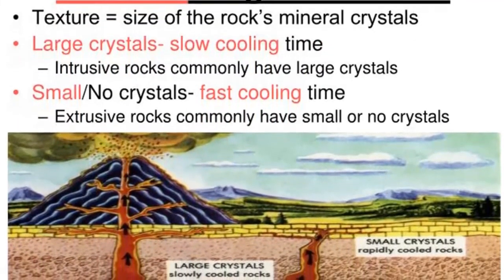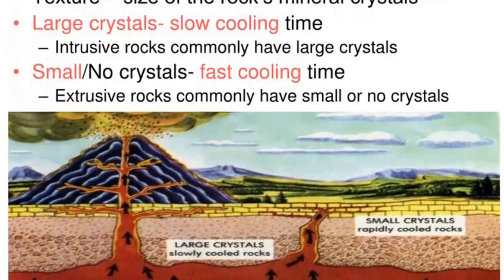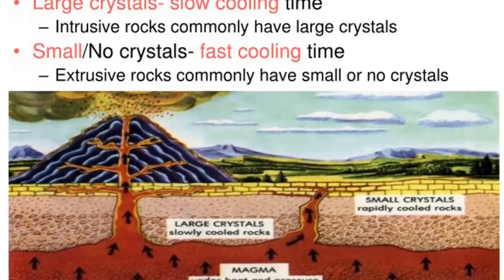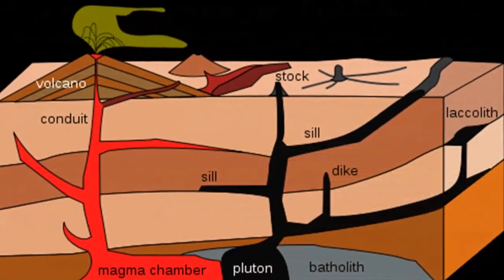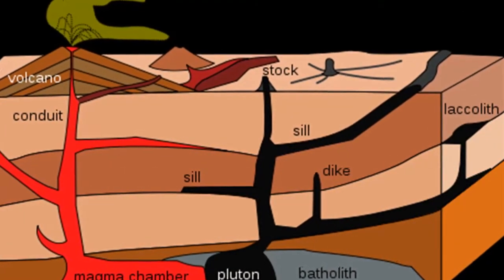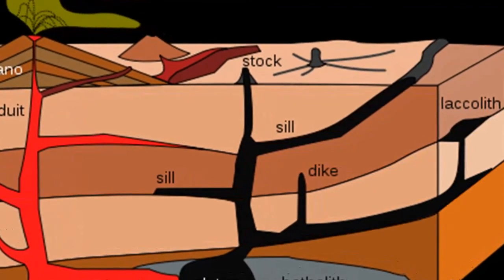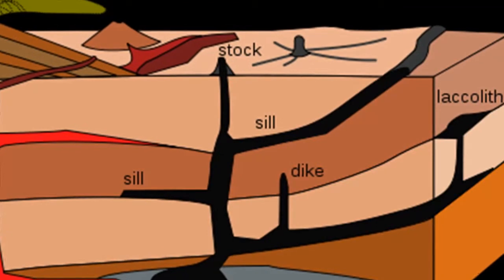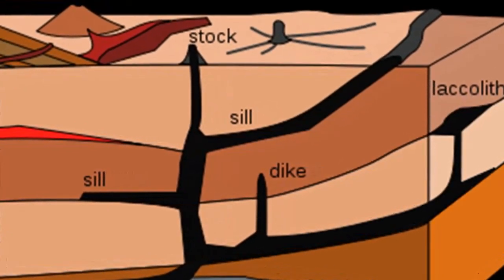On the other hand, when cooling occurs more rapidly, for example in a thin lava flow, the ions quickly lose their mobility and readily combine to form crystals. This results in the development of numerous embryonic nuclei, all of which compete for available ions. The result is a solid mass of small intergrown crystals.